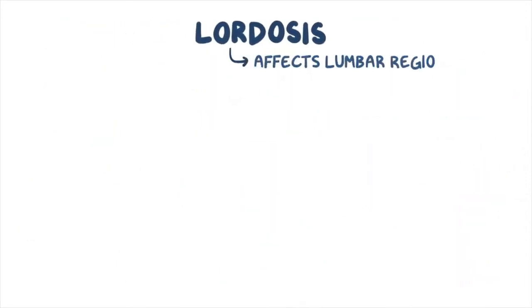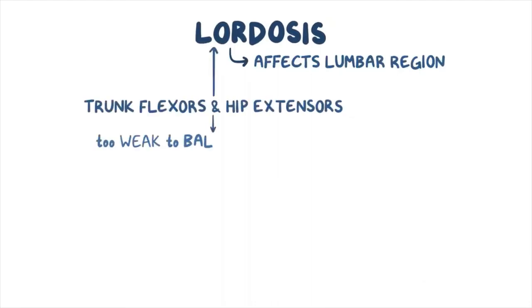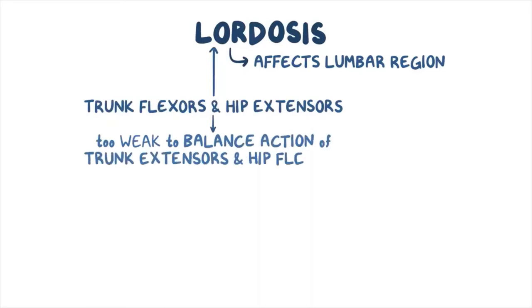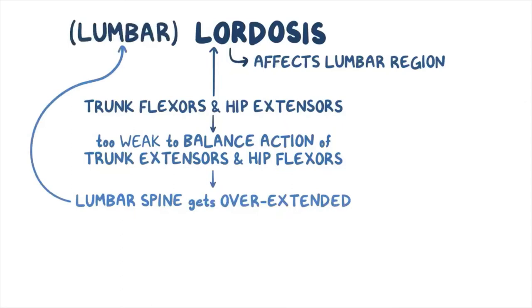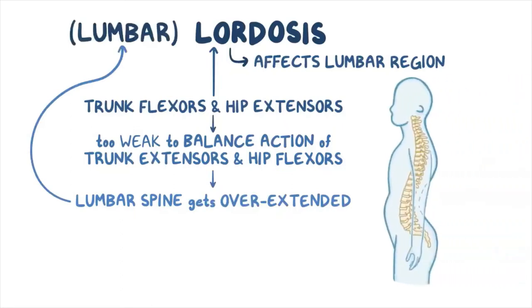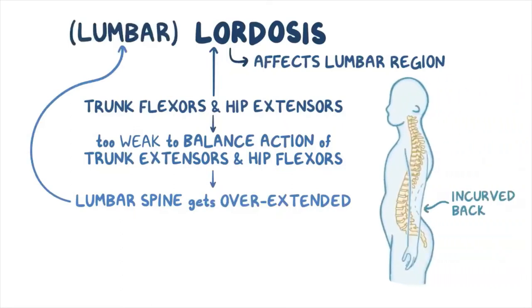Lordosis typically affects the lumbar region and can result from trunk flexors and hip extensors becoming too weak to balance trunk extensors and hip flexors. When that happens, the lumbar spine gets overextended, progressively curving inward and causing lumbar lordosis — resulting in an incurved back in the cervical or lumbar spine.